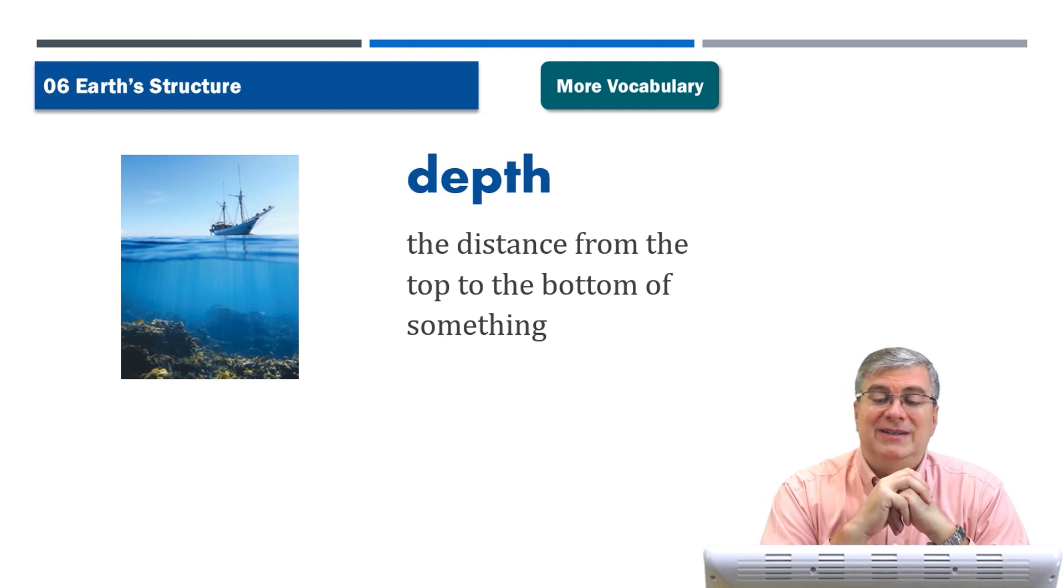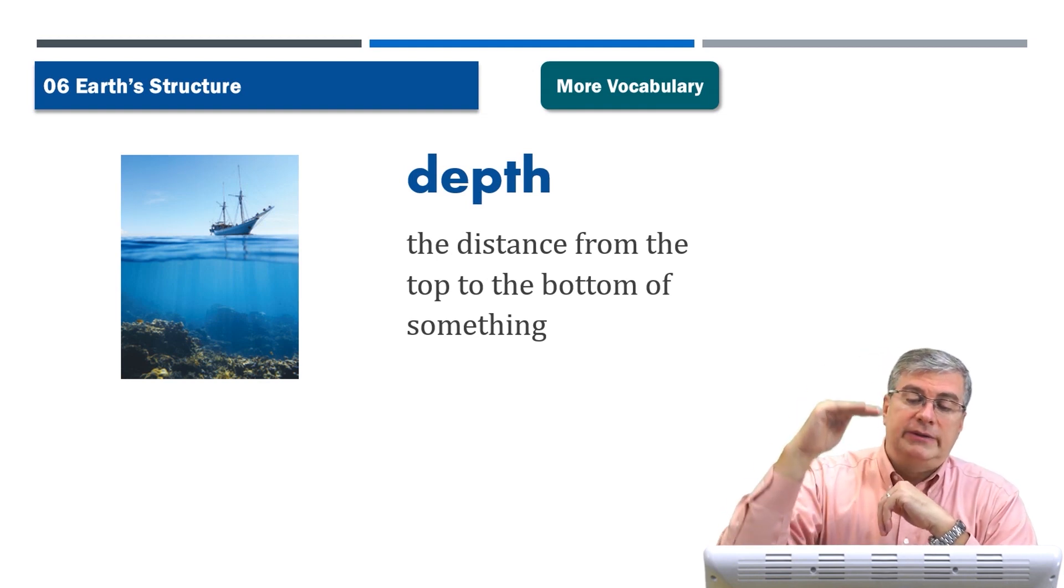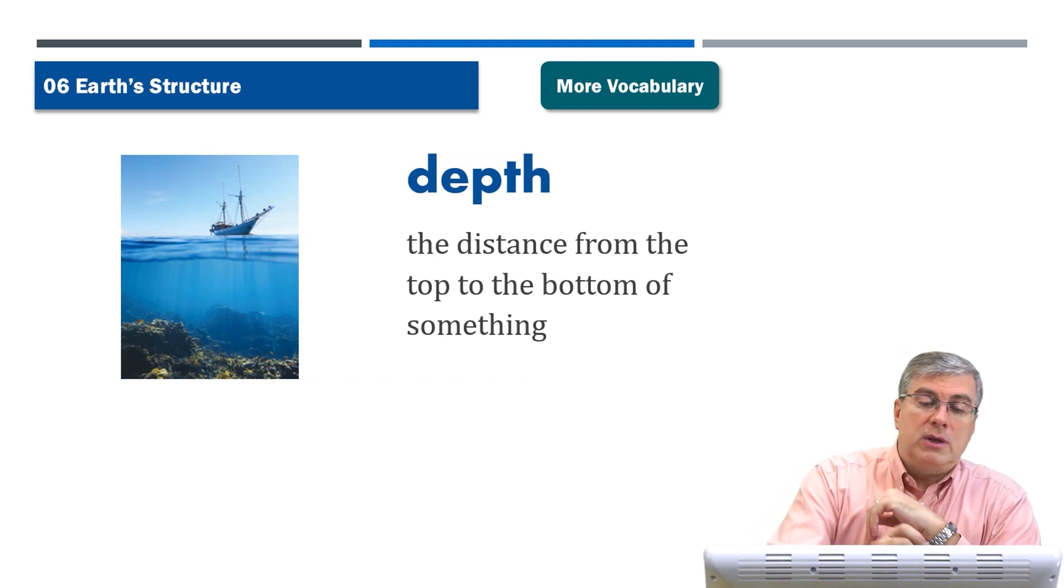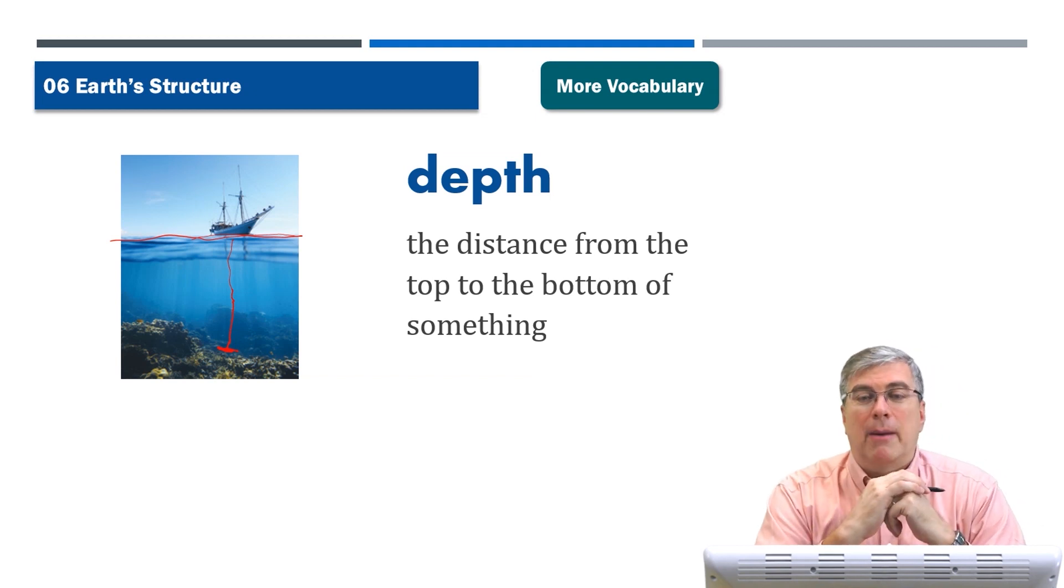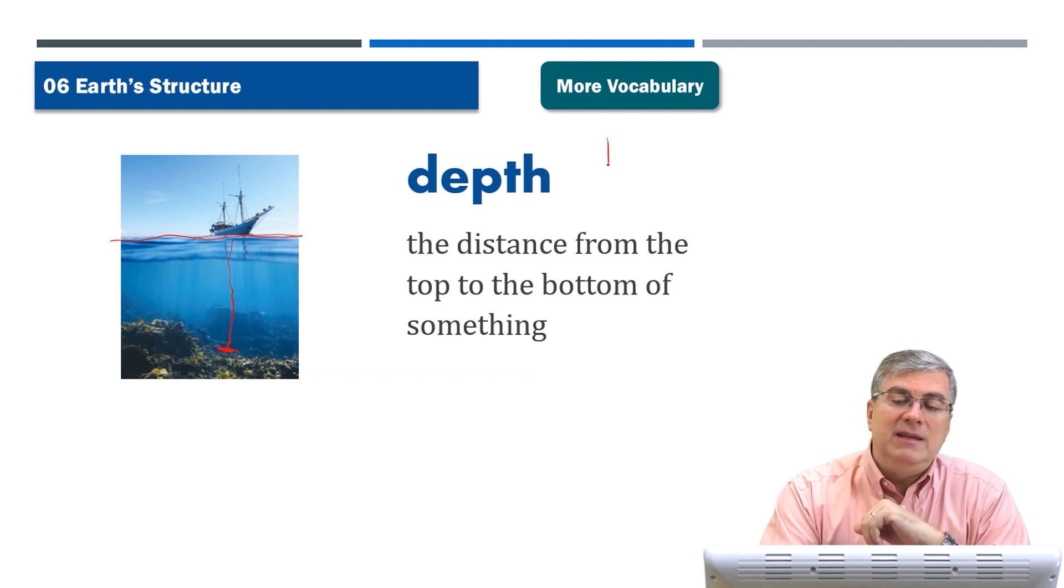Depth. Depth is the distance from the top to the bottom of something. So if you're thinking, this is a good picture, right? So you think about the surface is up here of the ocean. That's the surface. What is the depth? That is the distance from the layer of water on the surface to the bottom of the ocean, the rock. How deep is that? What is the depth? We could also say, how deep is it? How deep? So we change the word a little bit. How deep is it? We change the word. How deep is it?